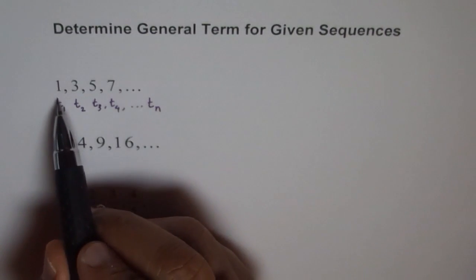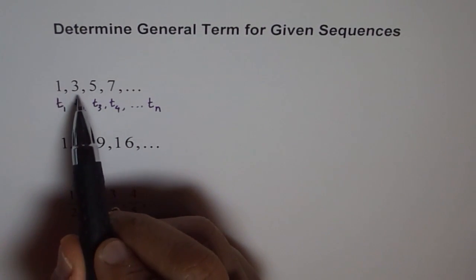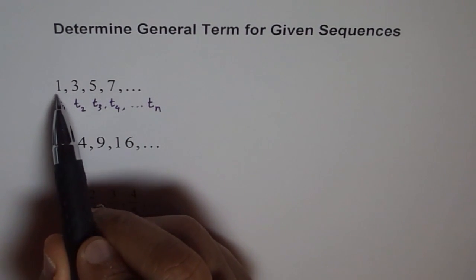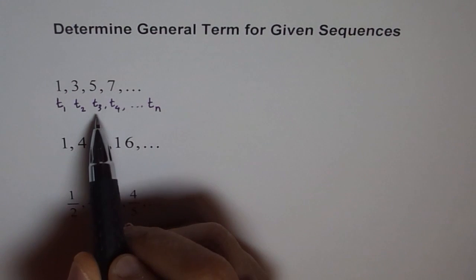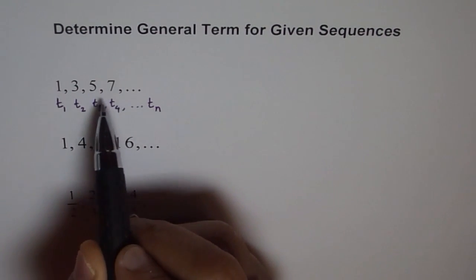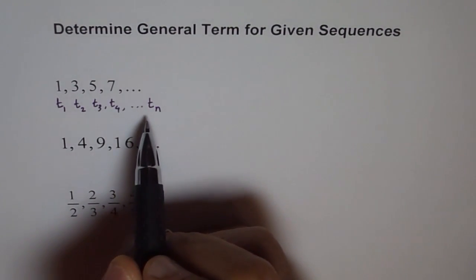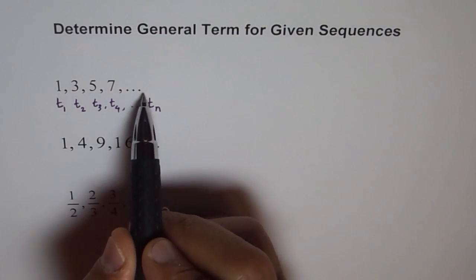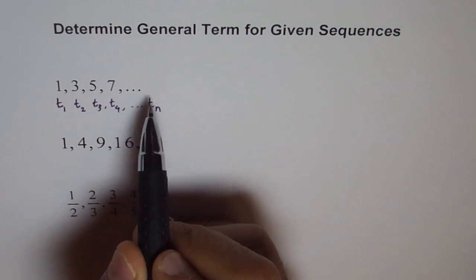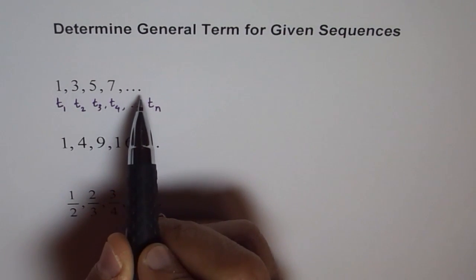In a sequence, this order is very important. It cannot be changed. The terms are fixed. This is the first term T1, second term T2, third term T3, and 7 is fourth term. In general, we will have Tn. This seems to be an infinite sequence. When we write dots like this, it means it is never ending.